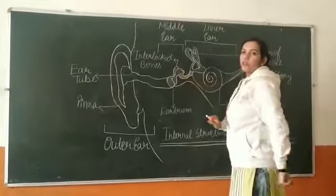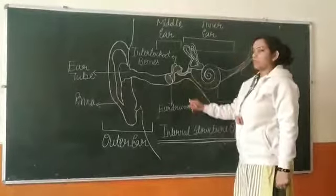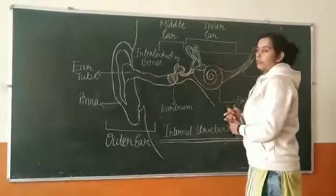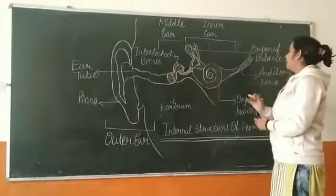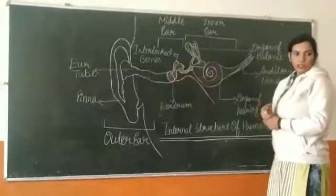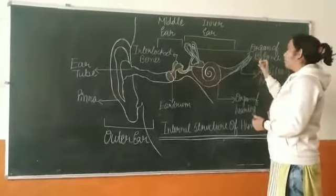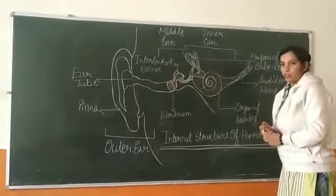And one more important thing to be noted here is that stapes is the smallest bone of the body. Now coming to the inner ear. The inner ear mainly consists of balance organs. That's why the ear is also known as a balancing organ, as organs of balance are present in this zone.